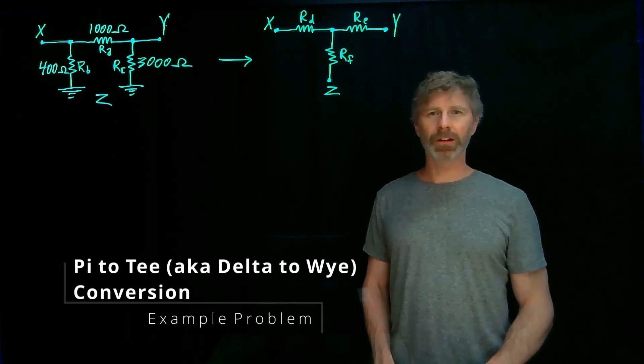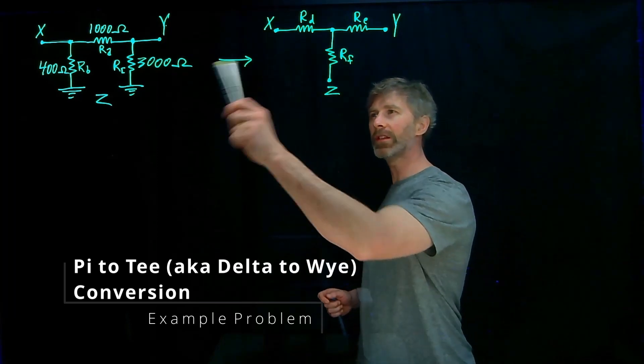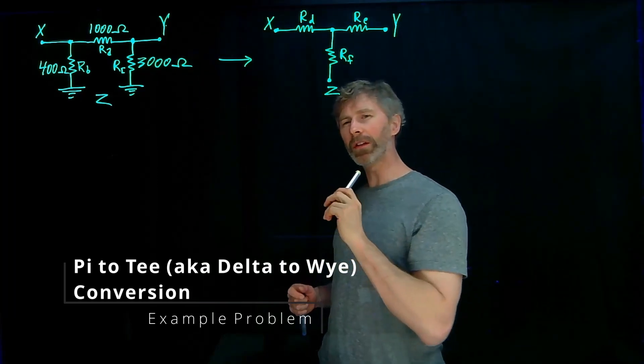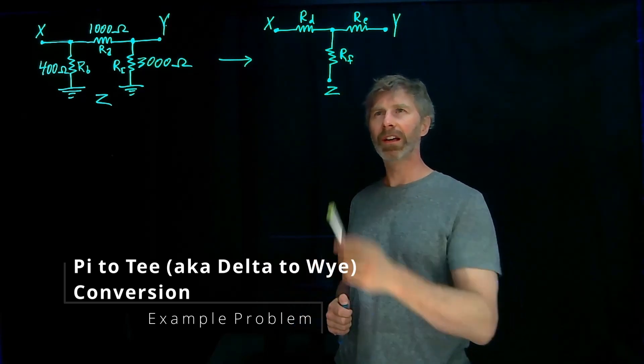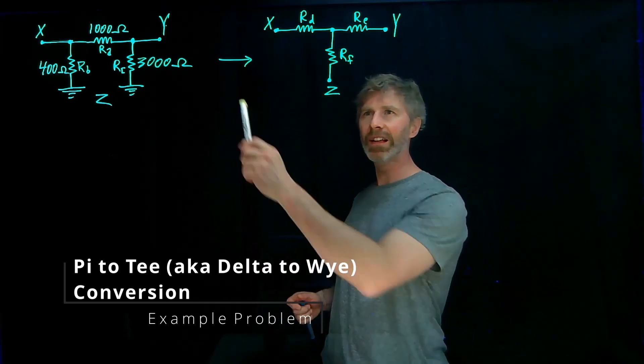Hey, welcome to the electronics channel. In this video I'm going to do an example where I'm converting this pi network into this T network. One thing to remember is a pi network is the same as a delta network, and a T network is the same as a Y network. So we could also consider this a delta to Y conversion.